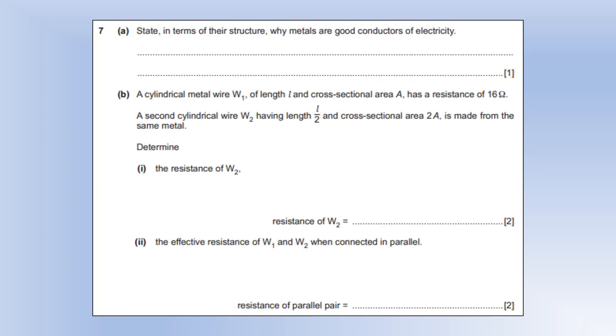So state in terms of their structure, why metals are good conductors of electricity. Well, to be a good conductor, you need free, or the technical term would be delocalized electrons. And for a conductor, a typical value is one or two electrons per atom become free. It can be a bit more than that. It can be less, but that's a good ballpark figure.